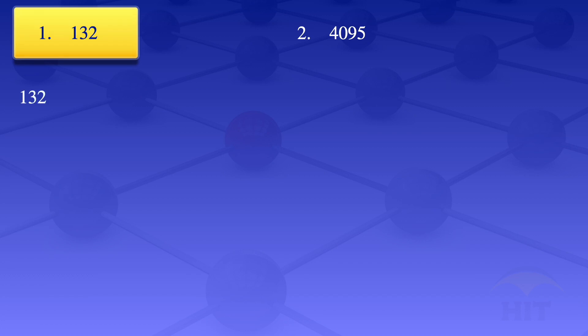So I'll go on and write 132. We start by the smallest prime number, the 2, and check if it divides 132. So 132 divided by 2 gives us 66, so therefore 132 is 2 times 66.